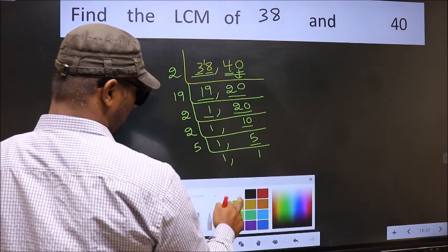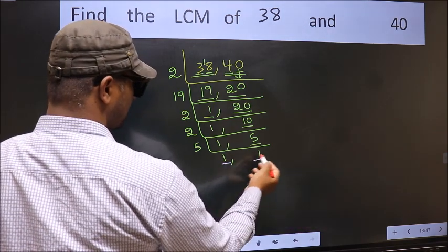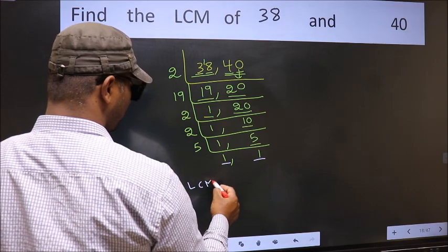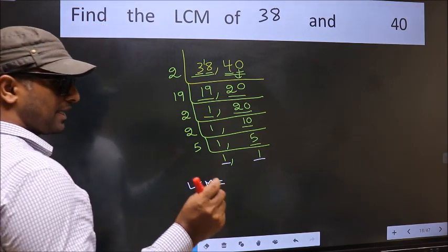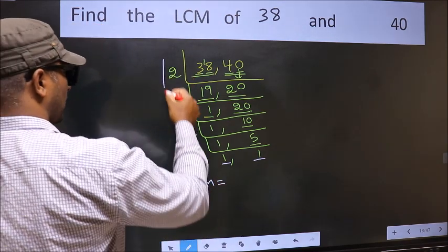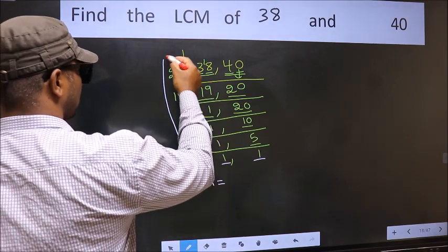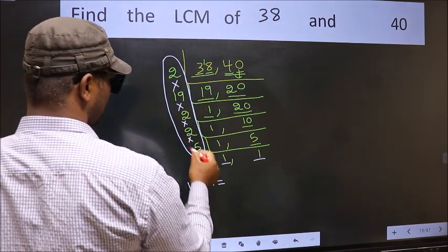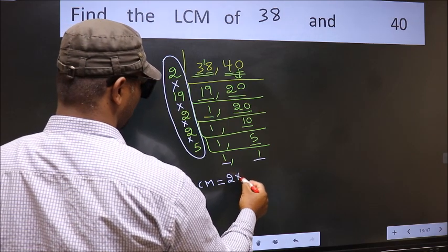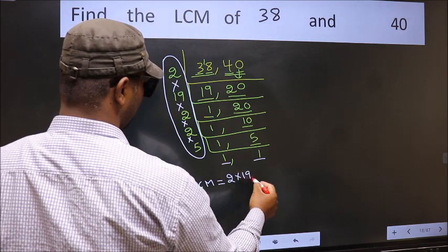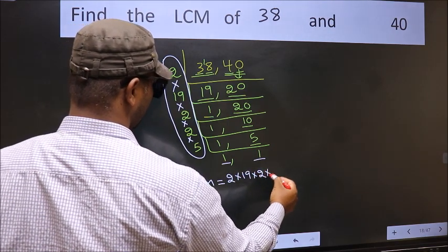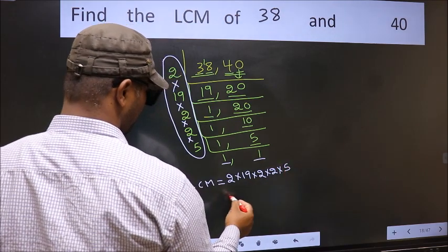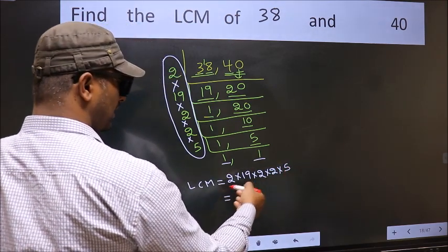We got 1 in both places, so our LCM is the product of all these numbers. LCM equals 2 times 19 times 2 times 2 times 5. When we multiply these numbers, we get 760. So the LCM of 38 and 40 is 760.